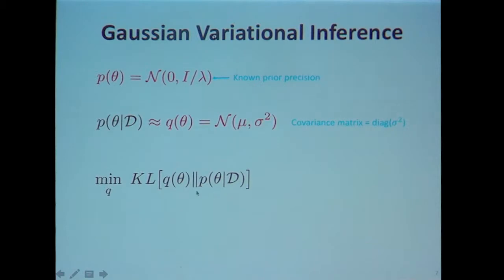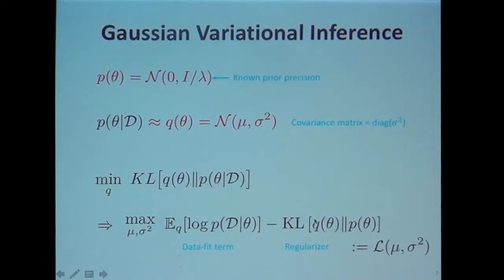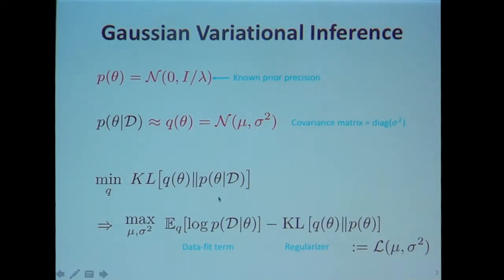In variational inference, you minimize the KL divergence, which you can write as an optimization problem. It looks like standard machine learning: there's a data fit term (a log likelihood term) whose expectation you maximize under the distribution you're finding, plus a regularization term keeping the posterior approximation close to the prior. You maximize this objective with respect to mu and sigma squared, giving a lower-bound approximation to the integral.